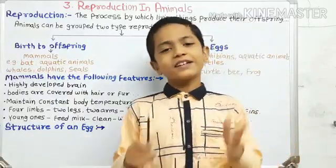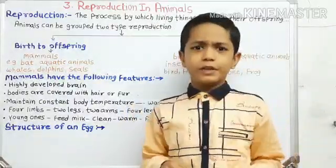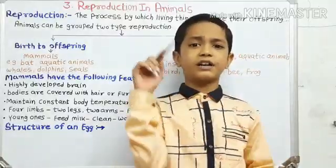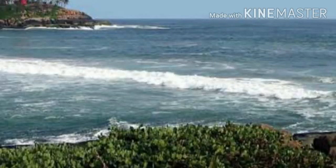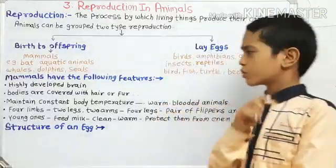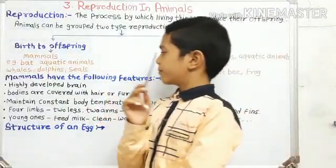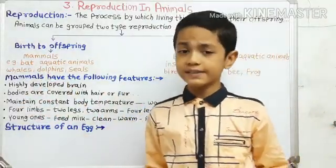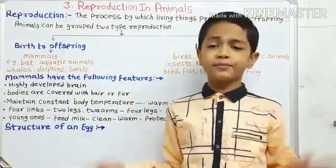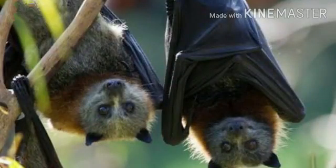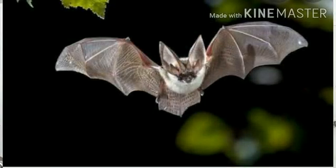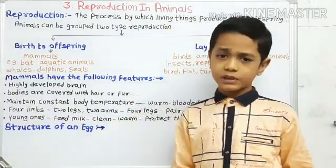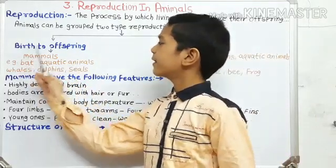These are the terrestrial mammals. Some mammals live inside the sea — they are whales, dolphins, and seals. They do not lay eggs; instead they give birth to their offsprings. Some mammals are flying — they are bats. Bats do not lay eggs; they give birth to baby bats. These are also known as mammals.